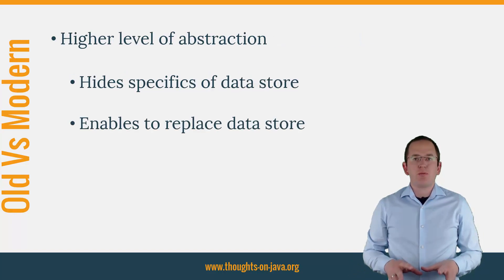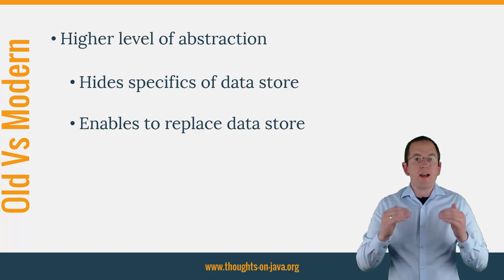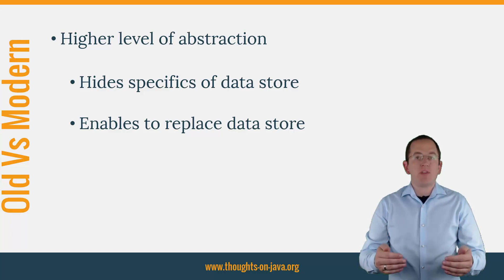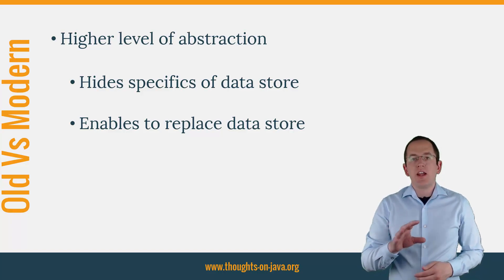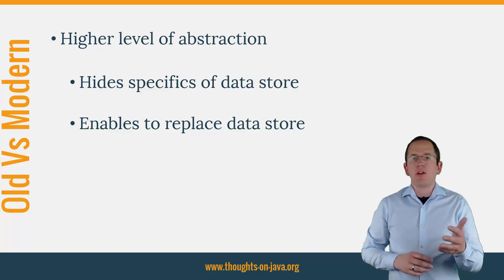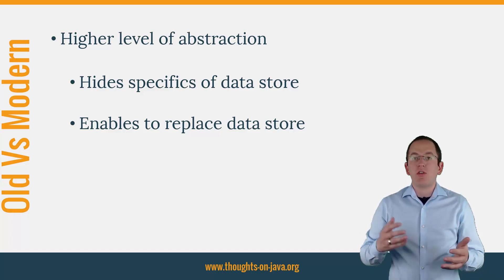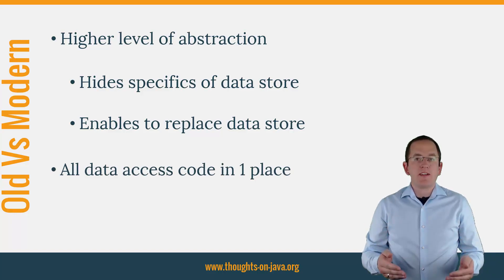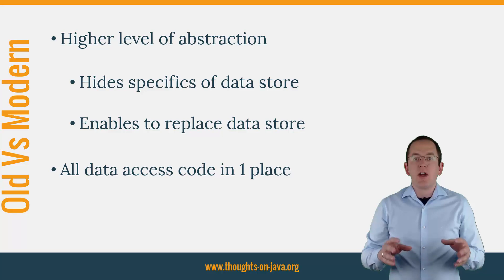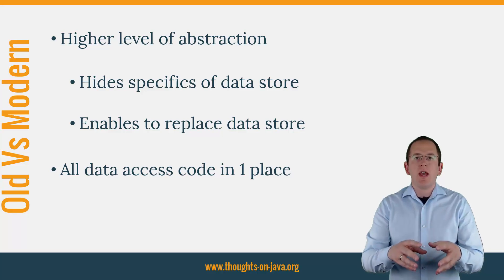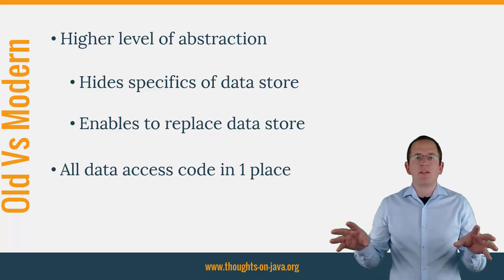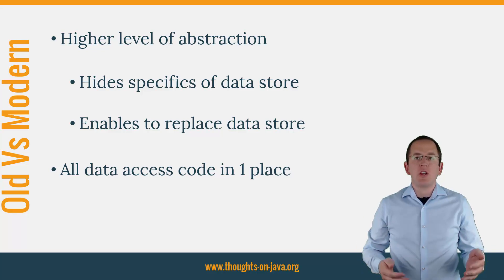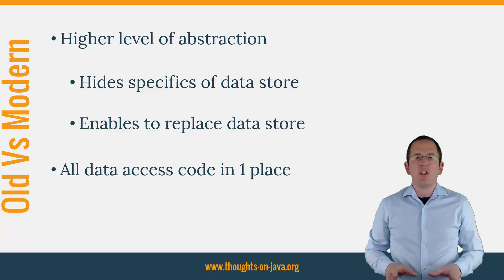That's why the new interpretation of the pattern now provides a higher level of abstraction and hides all specifics of the datastore. That enables you to replace a datastore with a completely different one, for example, a relational database with a NoSQL database. But what's even more important, all database access methods for an entity are defined in the same repository and not in different parts of your business logic. That makes the implementation of your business logic and reusing queries or other database operations much easier.